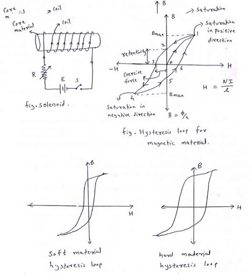The material with less hysteresis loop is preferred for electrical machines and transformers. For hard material hysteresis loop is thick or fat. For soft material hysteresis loop is thin.